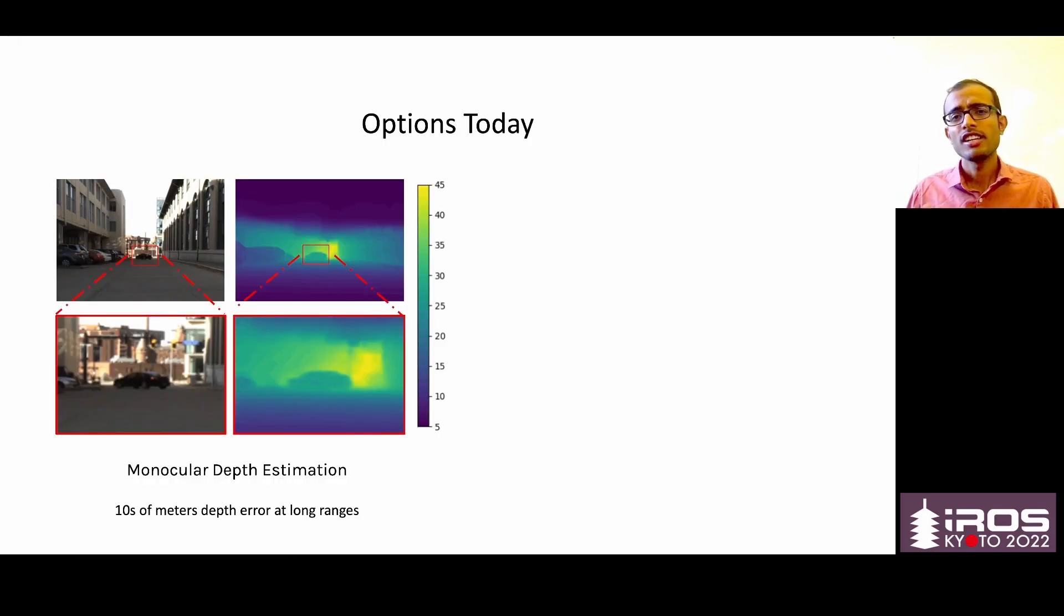One option is to use a single camera and do monocular depth estimation on top of this. This works reasonably well at short ranges, but we see problems at longer ranges. A car which is at 60 meters is detected somewhere to be around 40 meters with tens of meters of error.